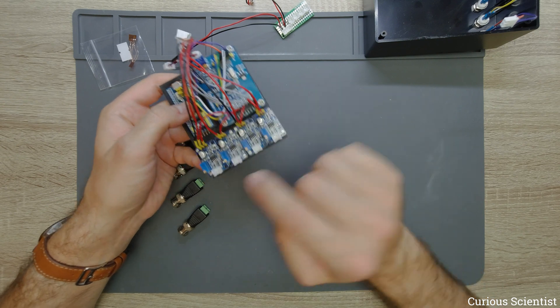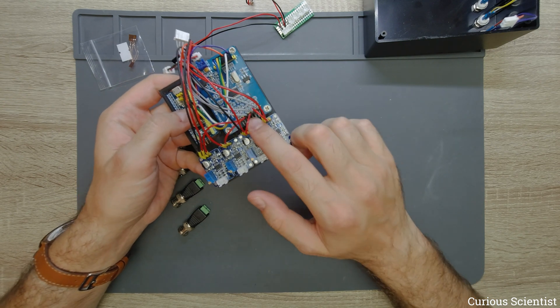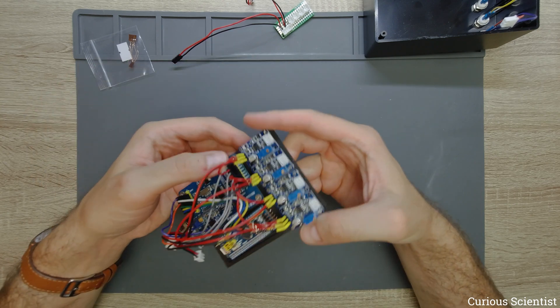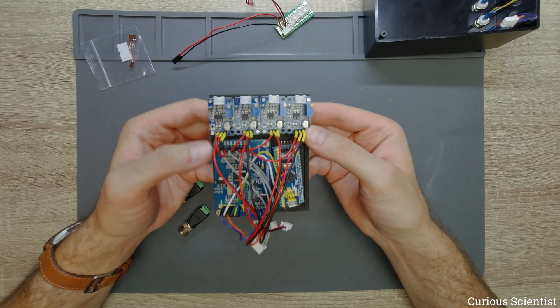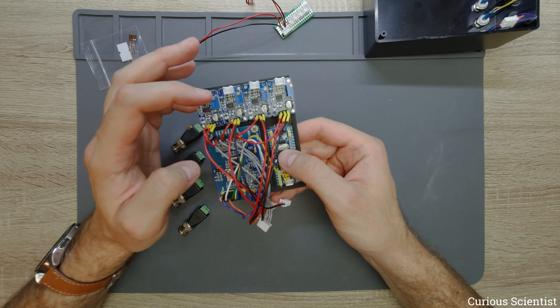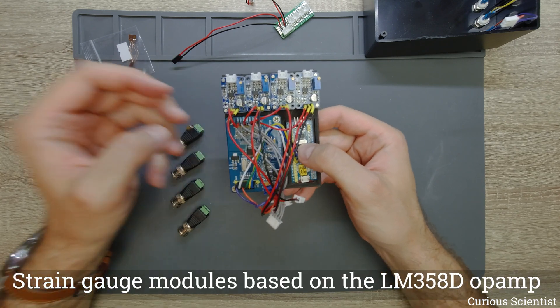This video will be a good example of how to use the ADS1256 in different applications. And then the circuits which are connected to the inputs of the ADS1256, these are four resistance bridges and amplifiers for strain gauges.